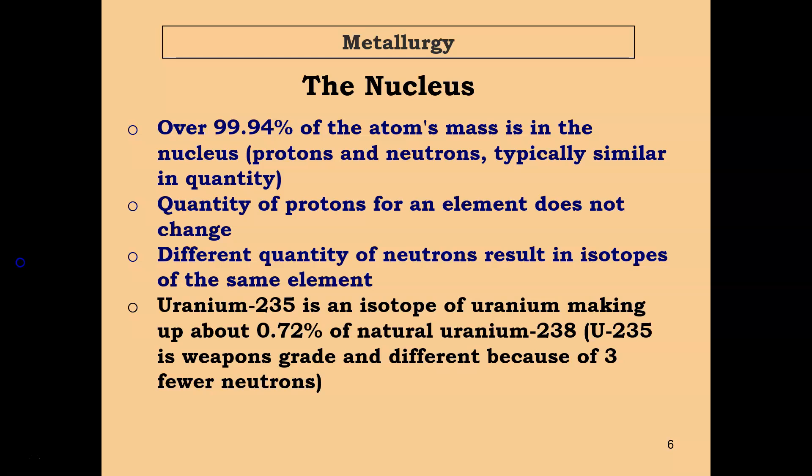Over 99.94% of the atom's mass is in the nucleus, which consists of the protons and neutrons, typically similar in quantity. Quantity of protons for an element does not change. Different quantity of neutrons results in isotopes of the same element. Uranium-235 is an isotope of uranium, making up about 0.72% of natural uranium-238. U-235 is weapons-grade and different because of three fewer neutrons.